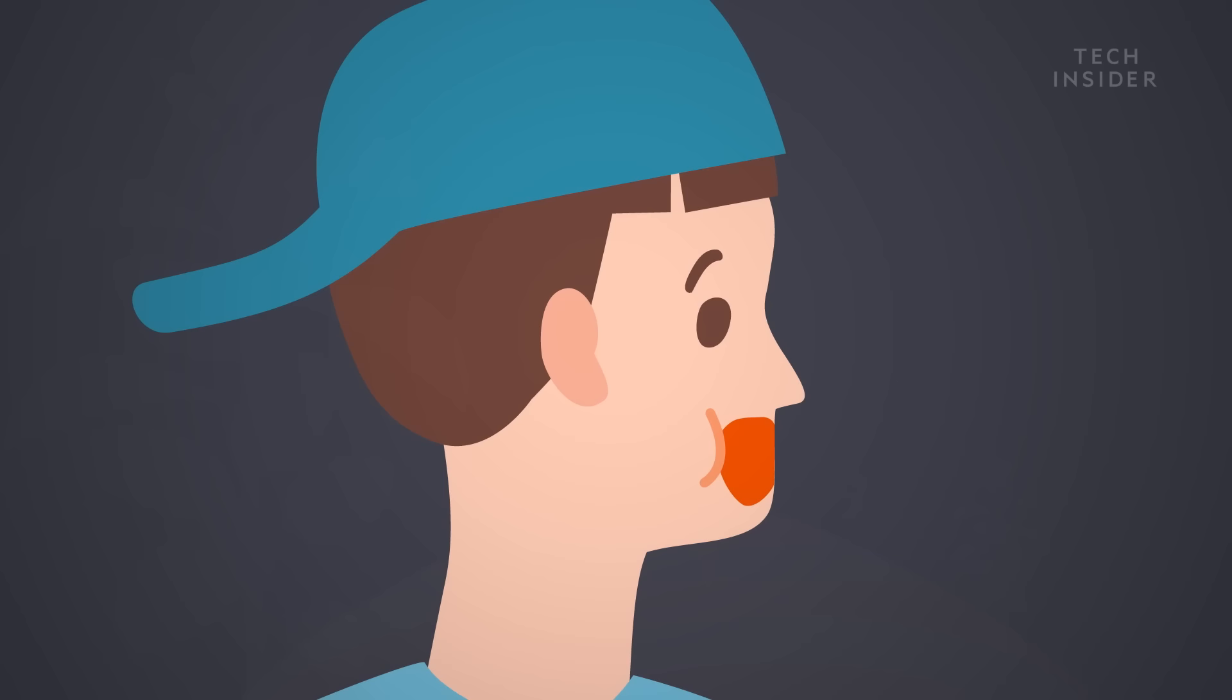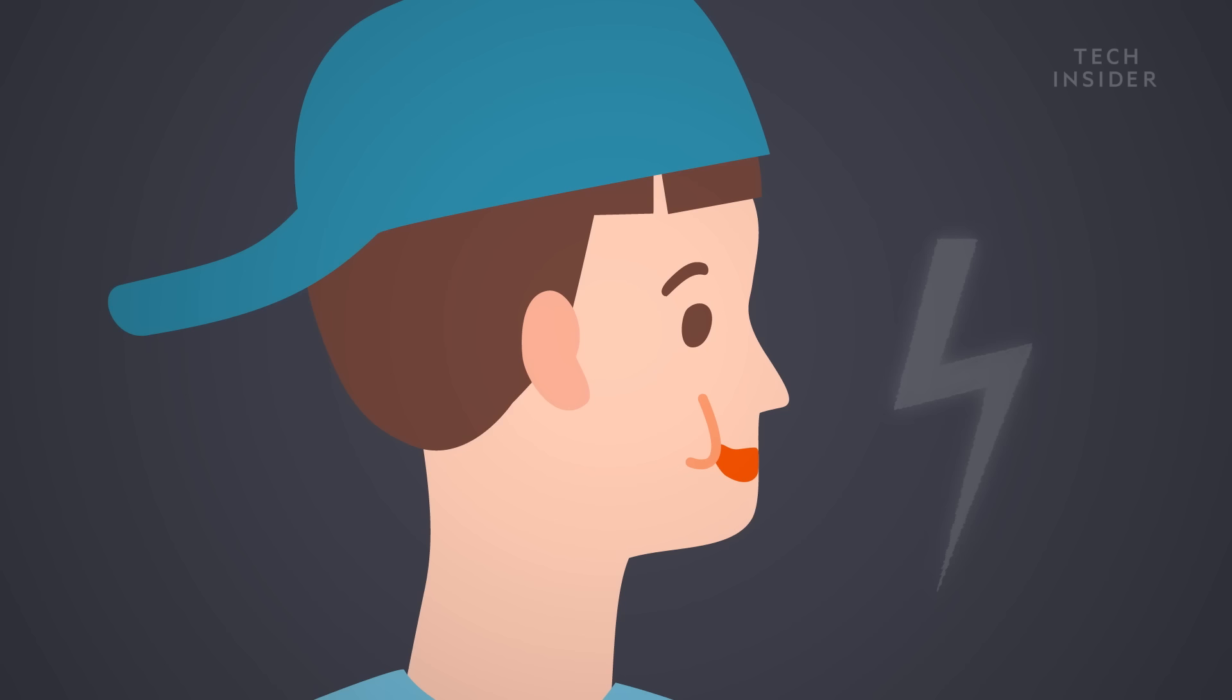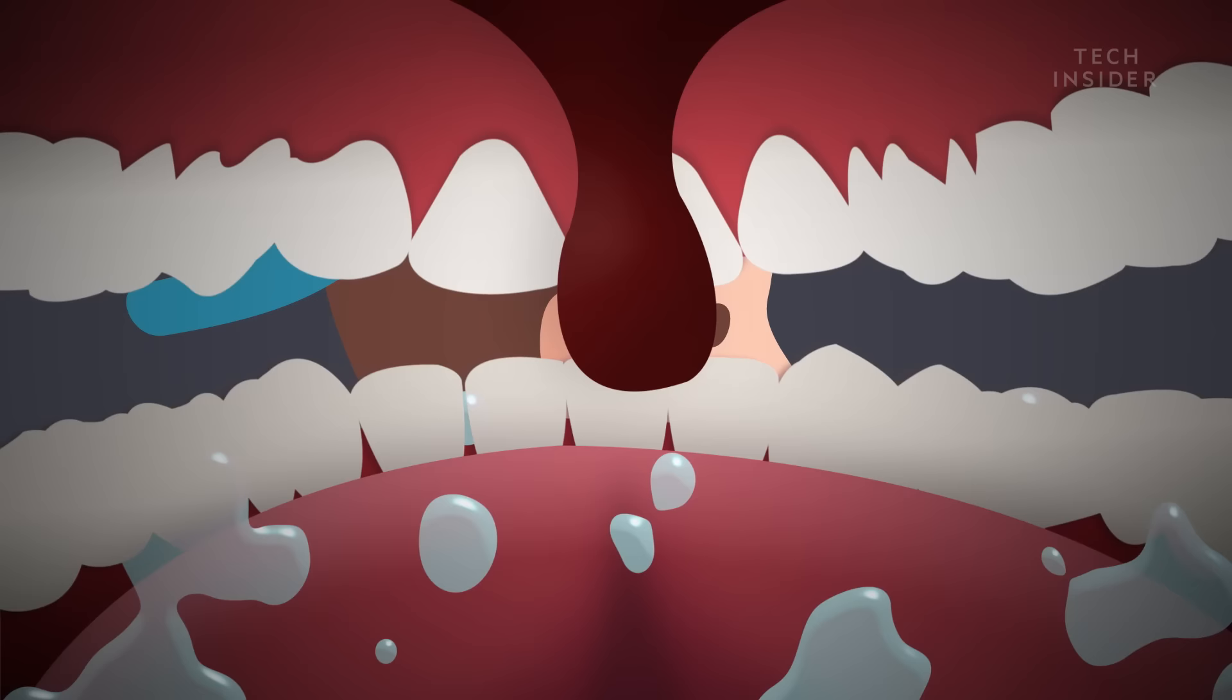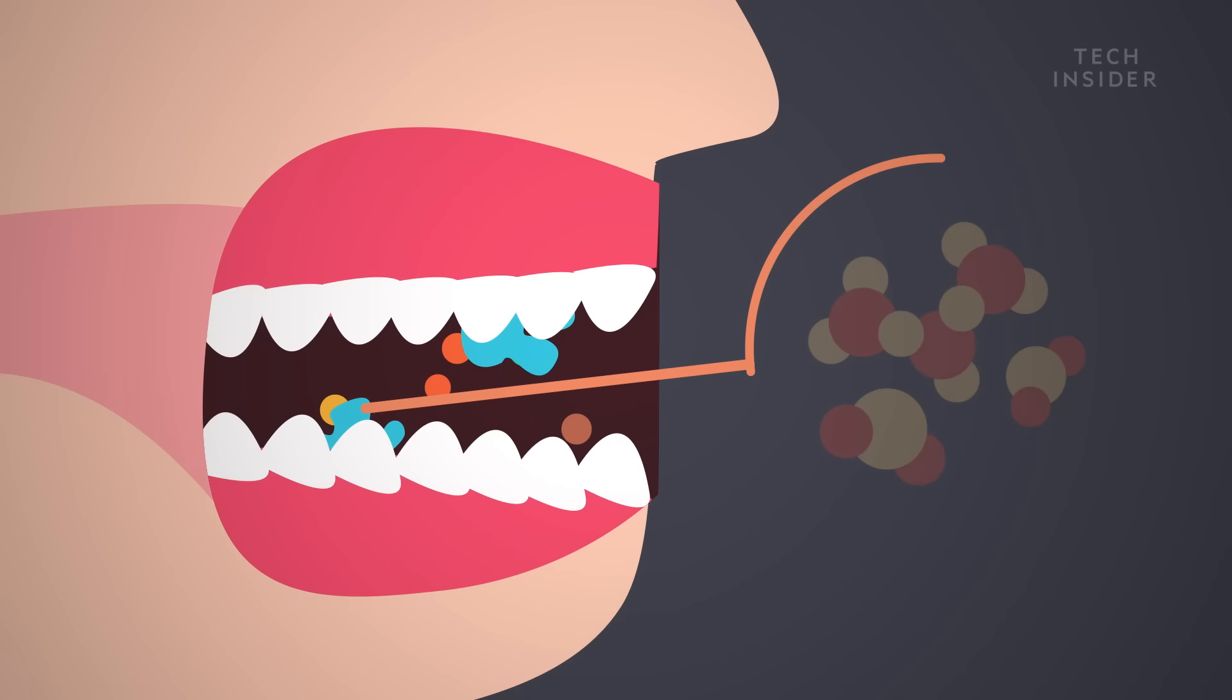When you eat standard food, three processes go to work in your body to turn that food into fuel. The first is obvious, it's chewing. The process breaks food down into smaller and smaller pieces, increasing the surface area. Meanwhile, saliva coats those pieces, delivering enzymes that help break down the food.